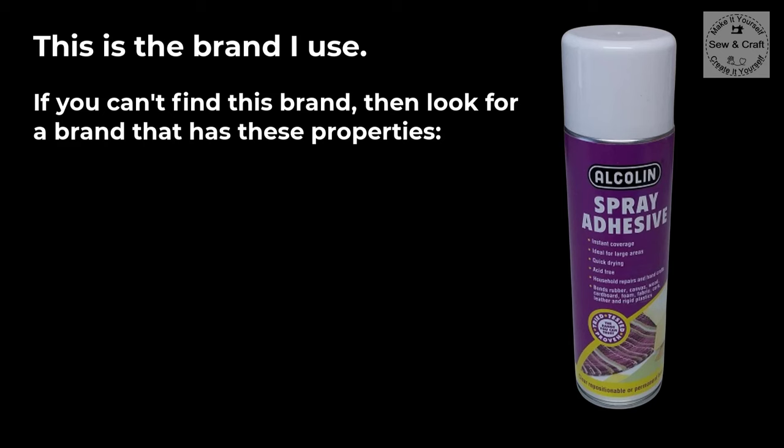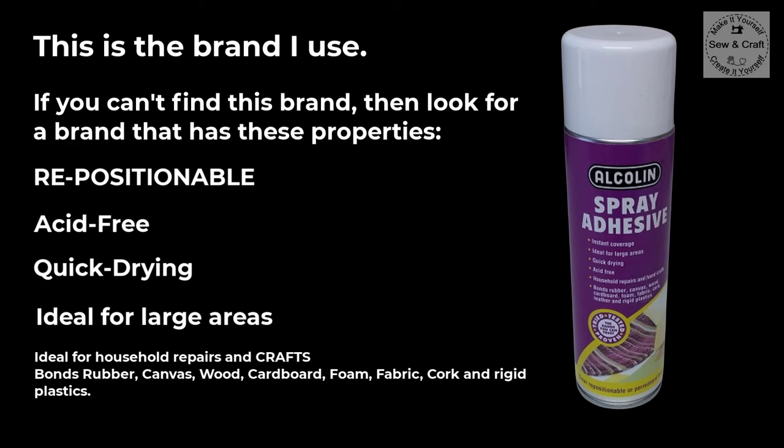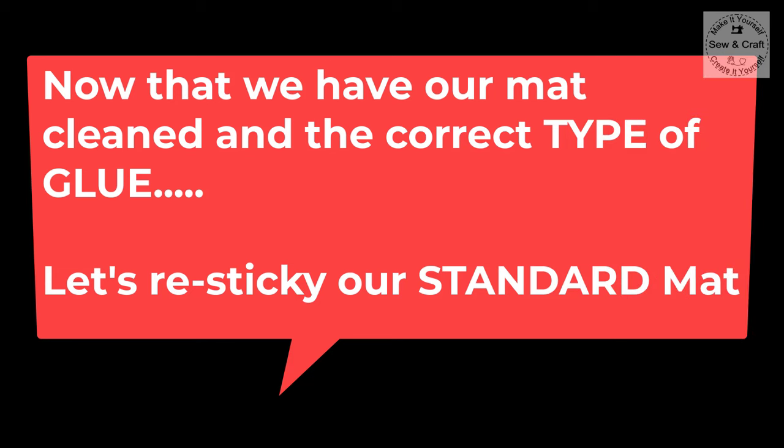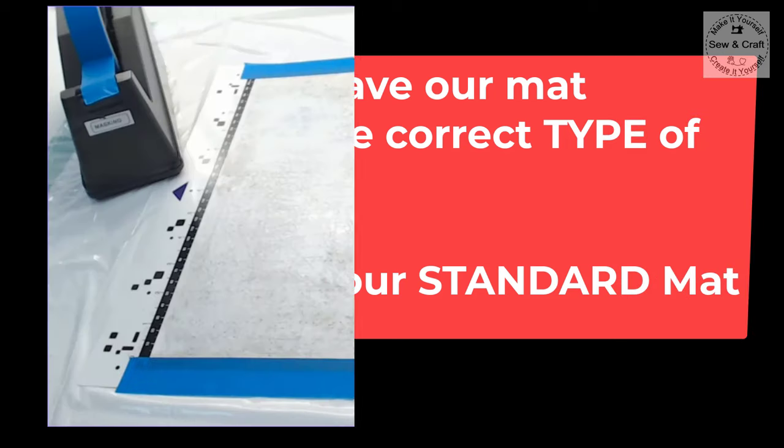Look for a brand that has these properties: it must be repositionable, acid-free, quick drying, ideal for large areas, and somewhere on the can it should also say that it's ideal for household repairs and crafts. It bonds rubber, canvas, wood, cardboard, foam, fabric, cork, and rigid plastics. Now that we have our mat cleaned and the correct type of glue, let's resticky our standard mat.